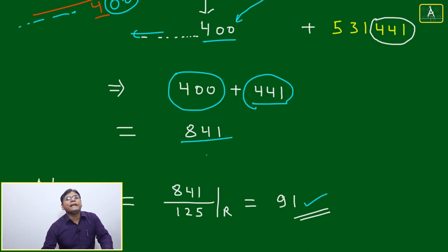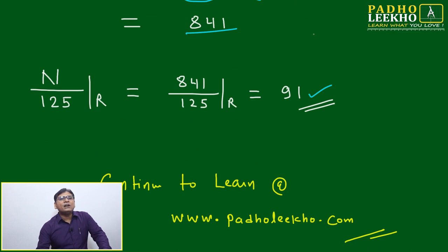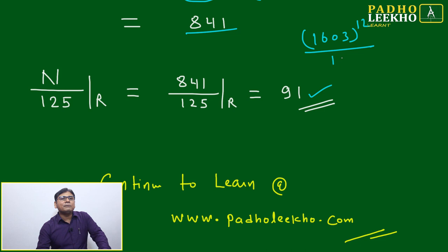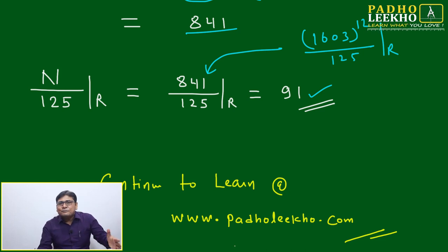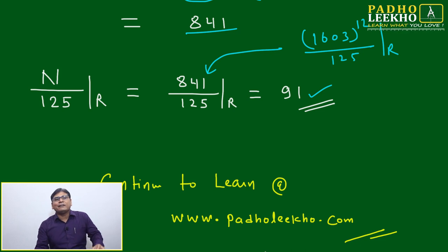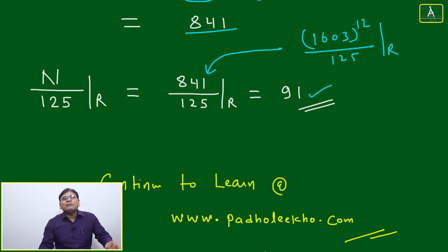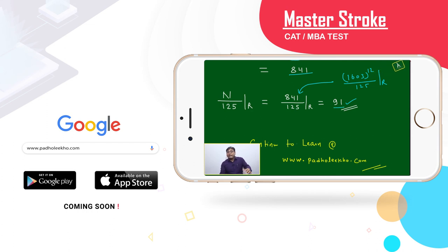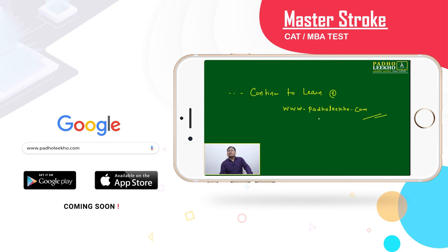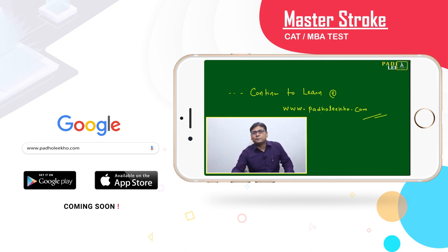Adding the two contributions: 400 + 441 = 841. So the last three digits of 1603^12 are 841. Dividing 841 by 125, the remainder is 91. The big complicated expression has been reduced to a simple calculation: 841 ÷ 125 gives remainder 91. Learning is endless — continue to learn at parolico.com.